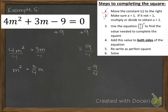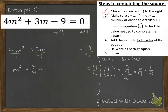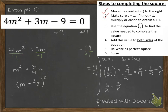Now a is 1 and b is 3 fourths. We need to find b over 2, which is 3 fourths over 2. Dividing by 2 is the same as multiplying by 1 half, so 3 fourths times 1 half gives 3 over 8. So b over 2 is 3 eighths — meaning when we factor the perfect square trinomial, it will be m plus 3 eighths, quantity squared. Then b over 2, quantity squared is 3 eighths squared: 3 times 3 is 9 and 8 times 8 is 64, so we get 9 over 64.